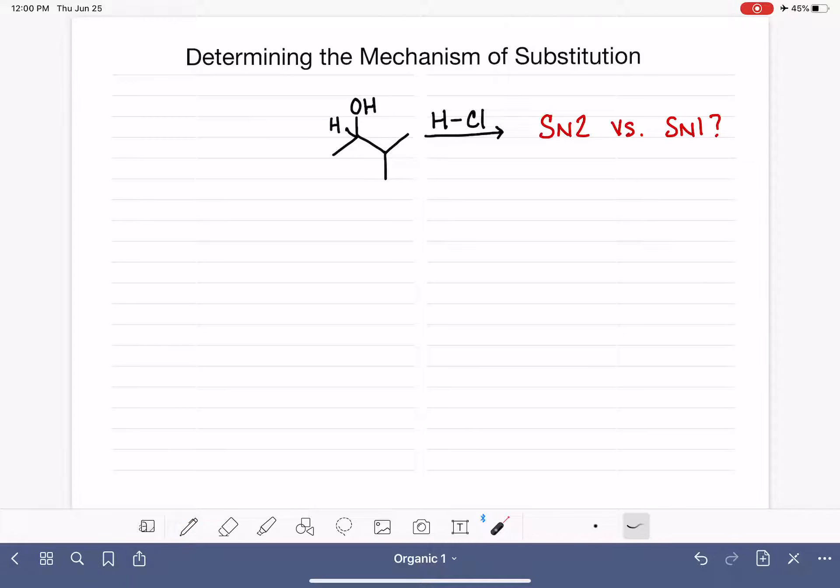This is one example of a reaction in the previous videos where I showed this reaction taking place by both the SN2 and the SN1 pathways. So you as chemists will need to be able to look at reactants and determine if they will take the SN2 or the SN1 pathway.